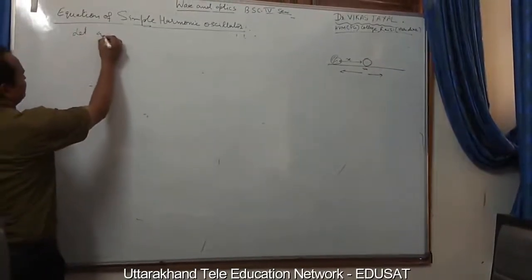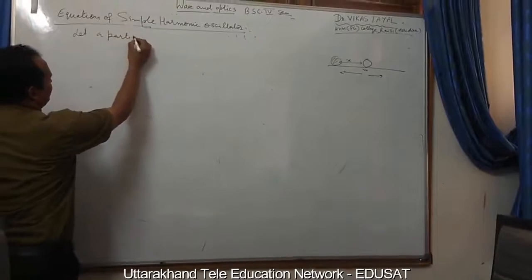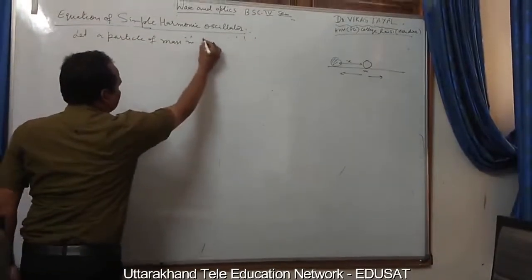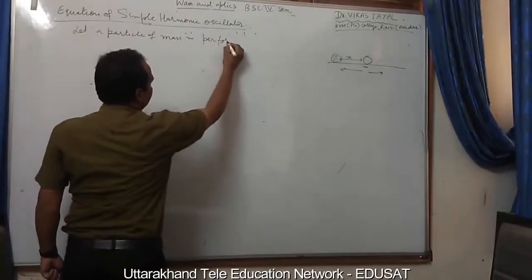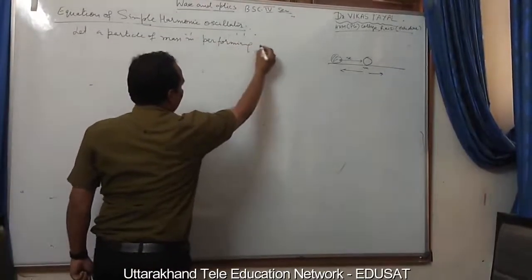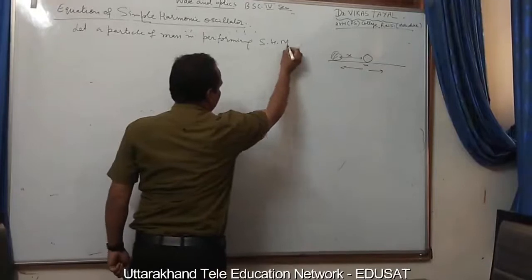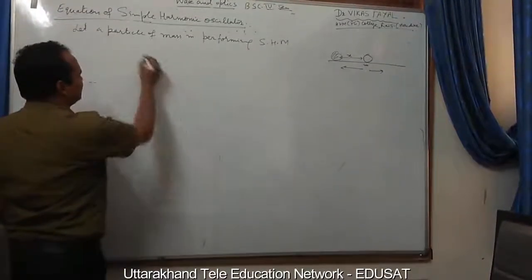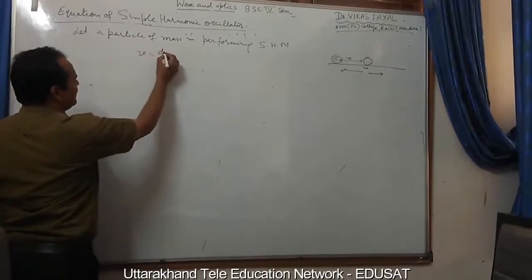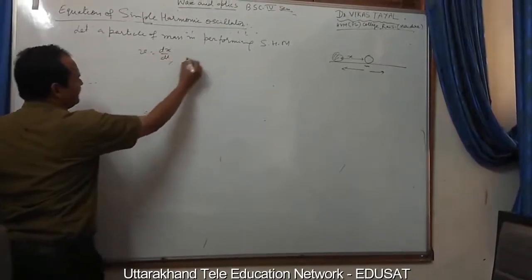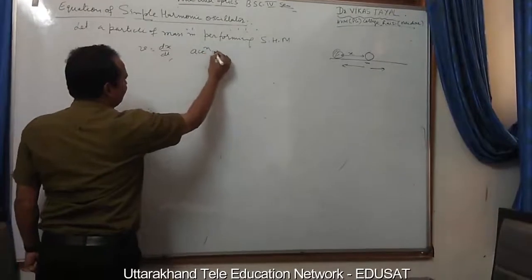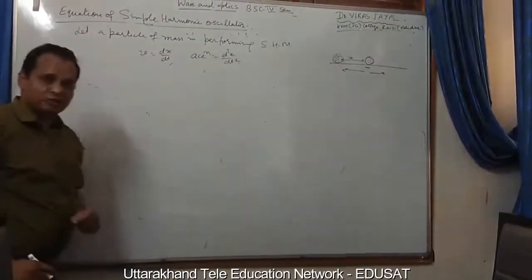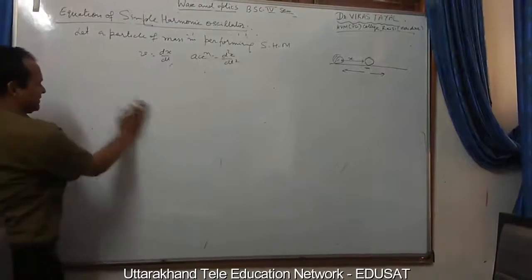Let the particle of mass M be performing simple harmonic motion. At any time, the displacement is x, the velocity is equal to dx/dt, and the acceleration is d²x/dt². This is the value of the acceleration.